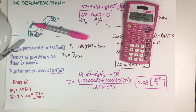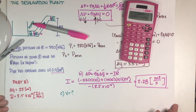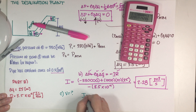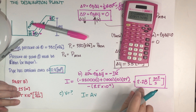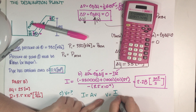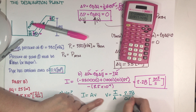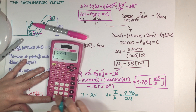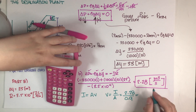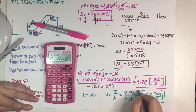Part three asks how fast the water is moving in part b. Using the definition of current: current equals area times velocity. We already have the current (2.28 m³/s) and the area (0.9 m²), so velocity equals current divided by area. That gives 2.28 divided by 0.9, which equals 2.53 meters per second. Final answer.